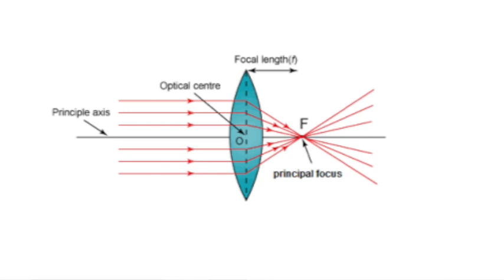The distance between the principal focus and the center of the lens is called the focal length. The power of a convex lens is expressed in positive values.